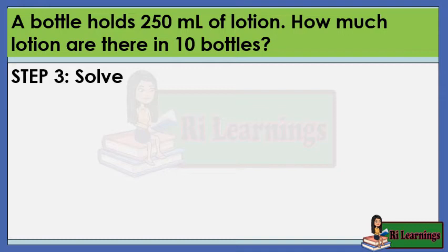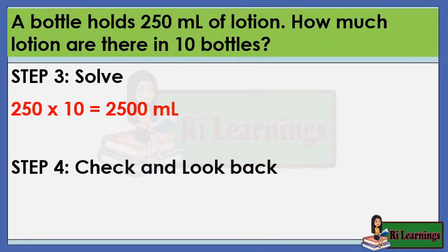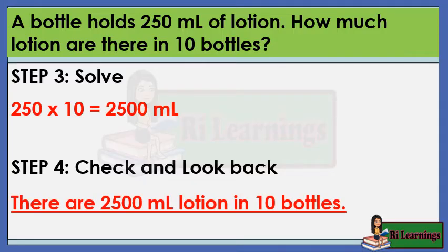Step 3: Solve. 250 times 10 equals 2,500. Step 4: Check and look back. Double check your work. See if you have performed the operations correctly and you got a reasonable answer. If your answer does check out, make sure that you write your final answer with the correct labeling. There are 2,500 milliliters of lotion in 10 bottles.